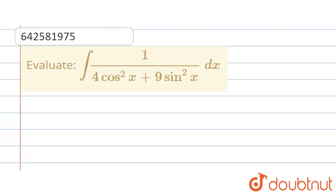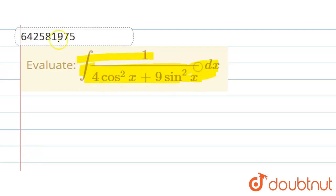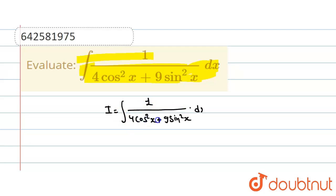Hello everyone, welcome to DoubtNet. Now the question is: find the integration of 1 upon 4cos²x plus 9sin²x dx. Let us consider I is equal to integration of 1 upon 4cos²x plus 9sin²x dx.